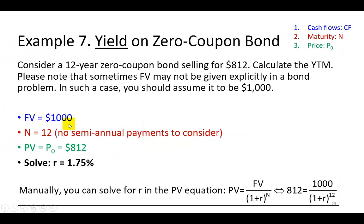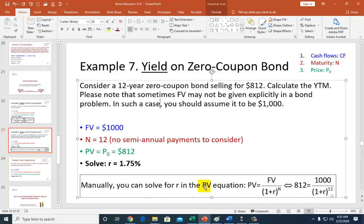What we're going to do here is to recognize that the cash flows here is going to be the face value. Again, investment period is 12 and no semi-annual payments to consider, of course. The price of this bond, which is the present value to use, is $812.